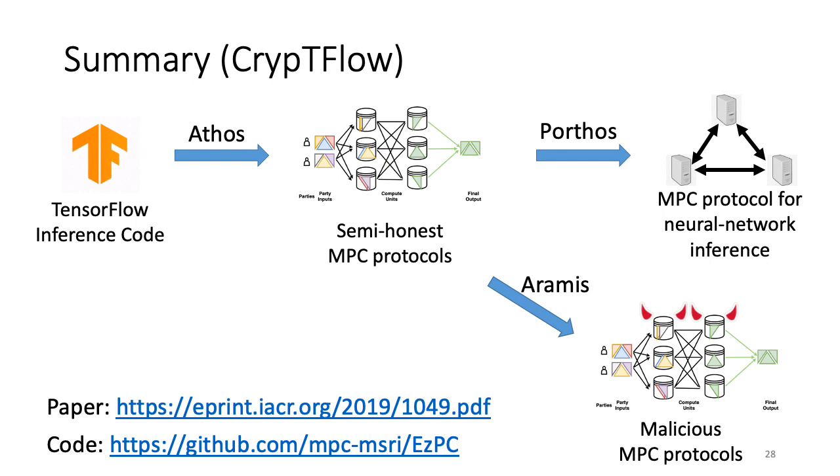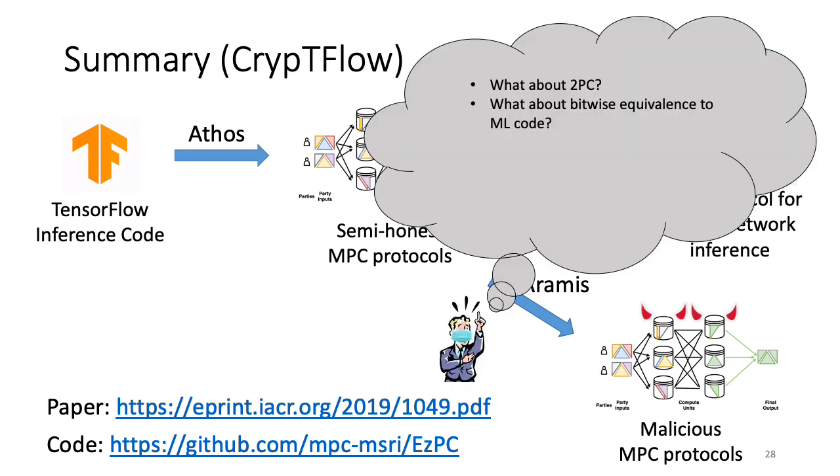In this talk, I presented our work on CryptFlow, an end-to-end solution for secure machine learning inference. Our paper and source code are both available online. Please check them out for more details. All this is good, but you might have two burning questions. What about 2PC and what about bitwise equivalence to ML code? As MPC protocols for ML typically perform truncations that are erroneous in the lower bits. You need not worry. We have a new system called CrypTen which addresses both of these concerns. The paper and source code for CrypTen will be released shortly. Thank you.